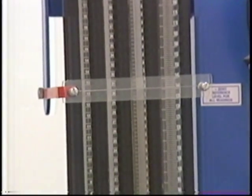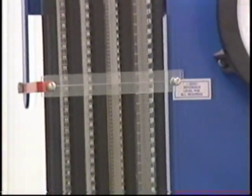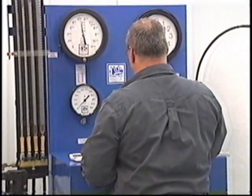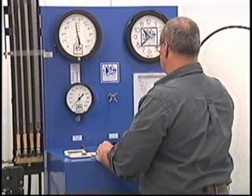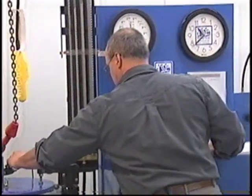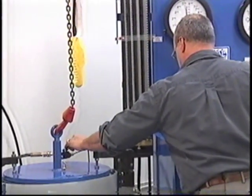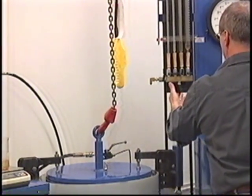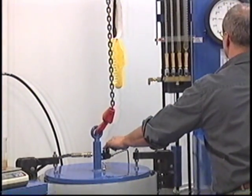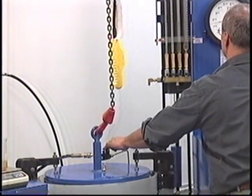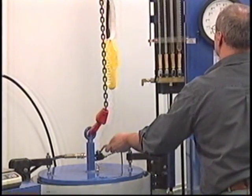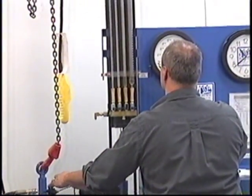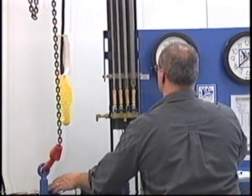In this case we went exactly to 5000, so that is the number that we will put in under the test pressure, and our total expansion was 73.4 cc. We are then going to relieve the pressure, and this will tell us what our permanent expansion is.